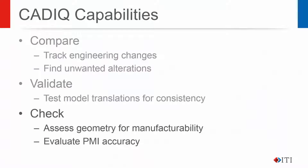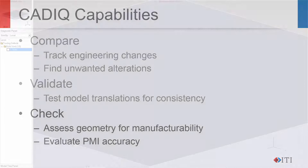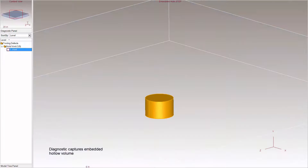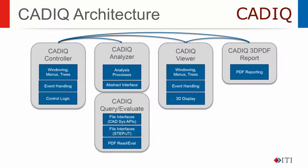Check assesses manufacturability and accuracy of model geometry and PMI. In this case, CAD-IQ found a hole which was accidentally embedded within a part's geometry — this would have been missed by manual checkers and visual inspection. In addition, CAD-IQ uses native system APIs and preferred third-party neutral format toolkits to ensure accurate reading of model data, identifying subtle issues that can slip through the cracks.